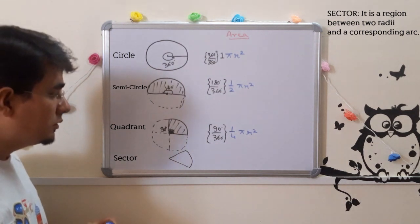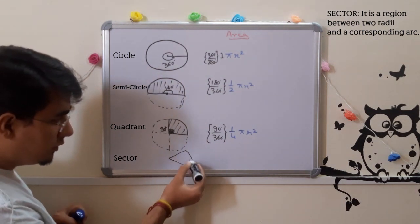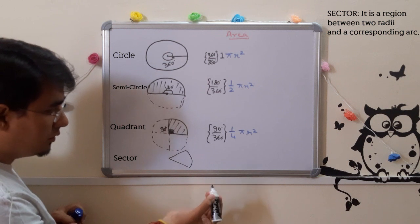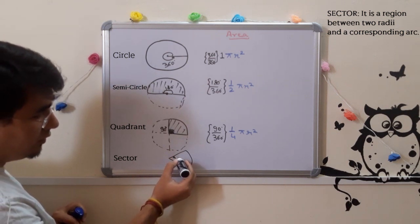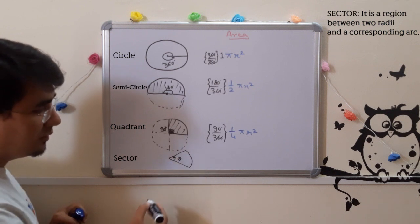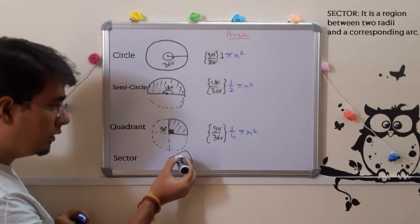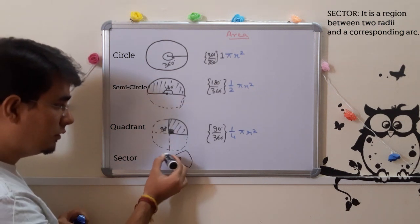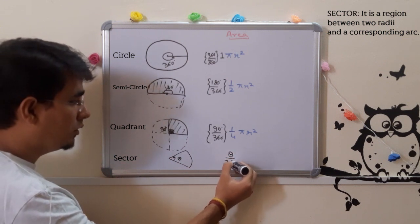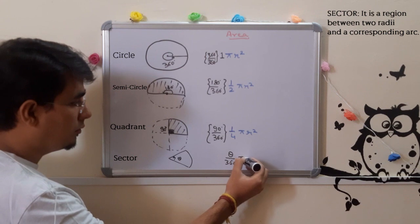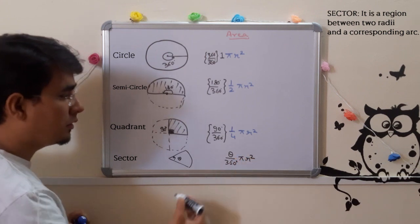That means if I have to think about the area of this particular sector, I need to think about what is the central angle, which we call theta. And for making a full circle, the formula becomes θ/360 × π r².